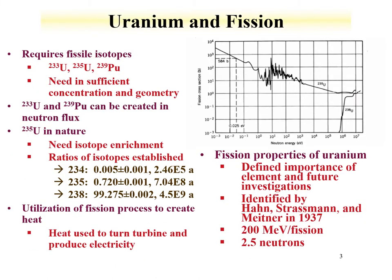The nuclear properties of uranium—particularly the uranium-235 fission process—drove an understanding of the separation and speciation of uranium in a number of systems. Fissile isotopes are required for thermal neutrons. Uranium-233 and uranium-235 are two uranium isotopes that undergo fission. Plutonium-239 also undergoes fission. In a reactor system, a sufficient concentration and geometry of these isotopes is needed to achieve the fission process. In natural uranium, only 0.7% is uranium-235.